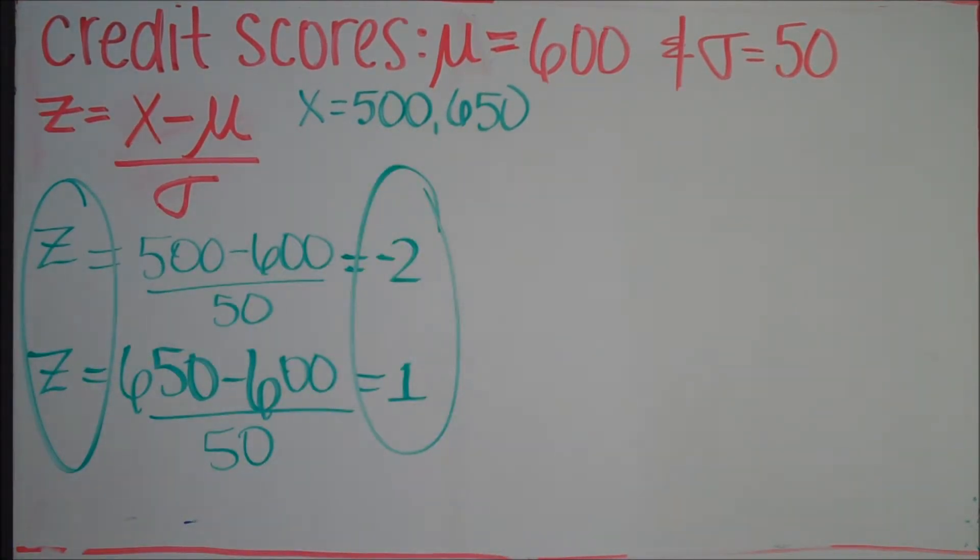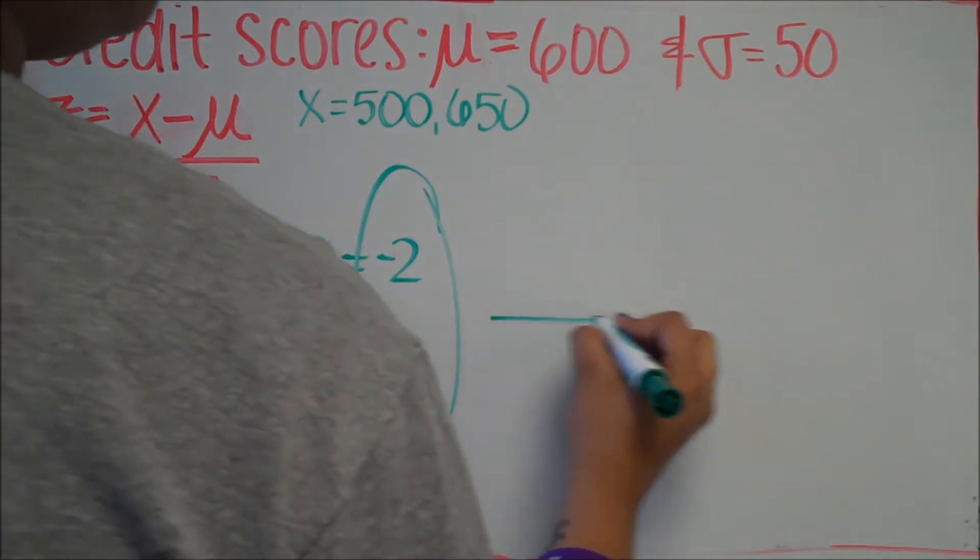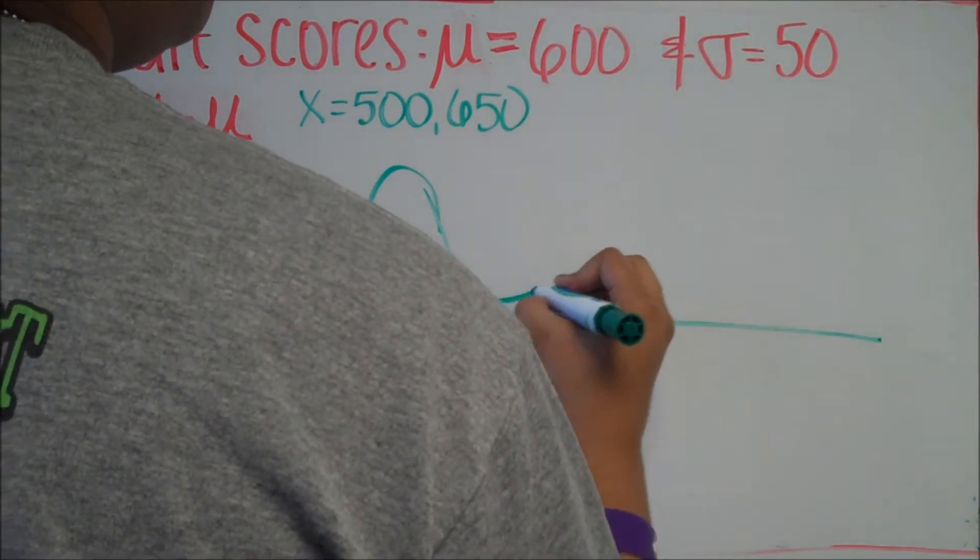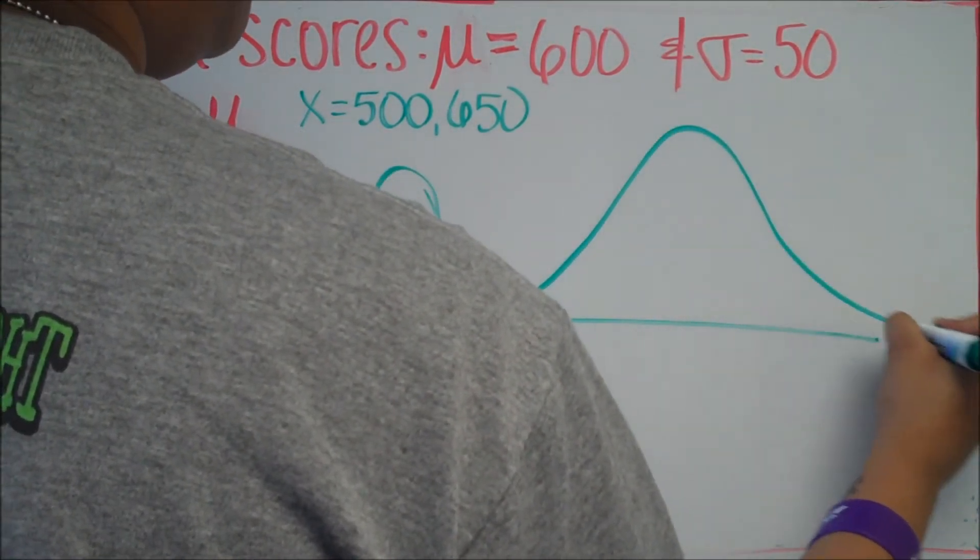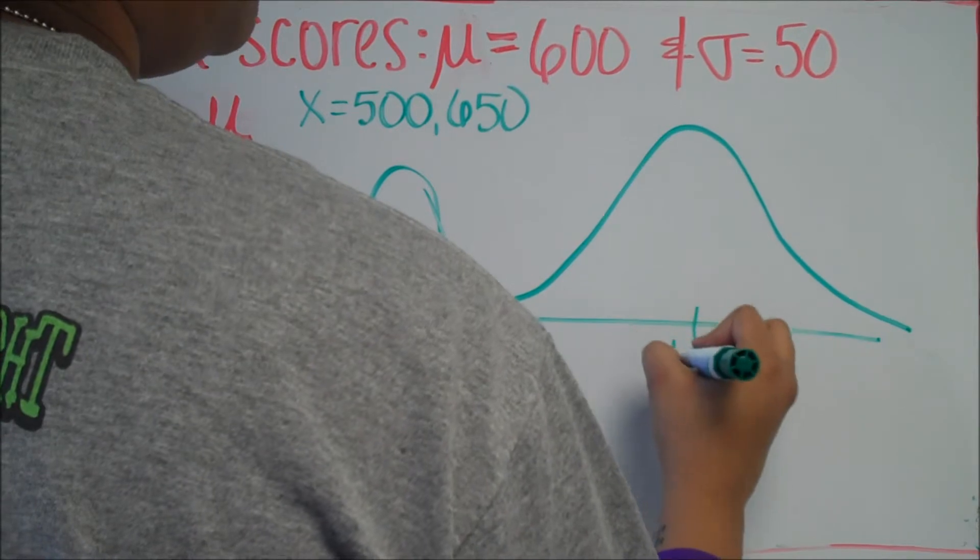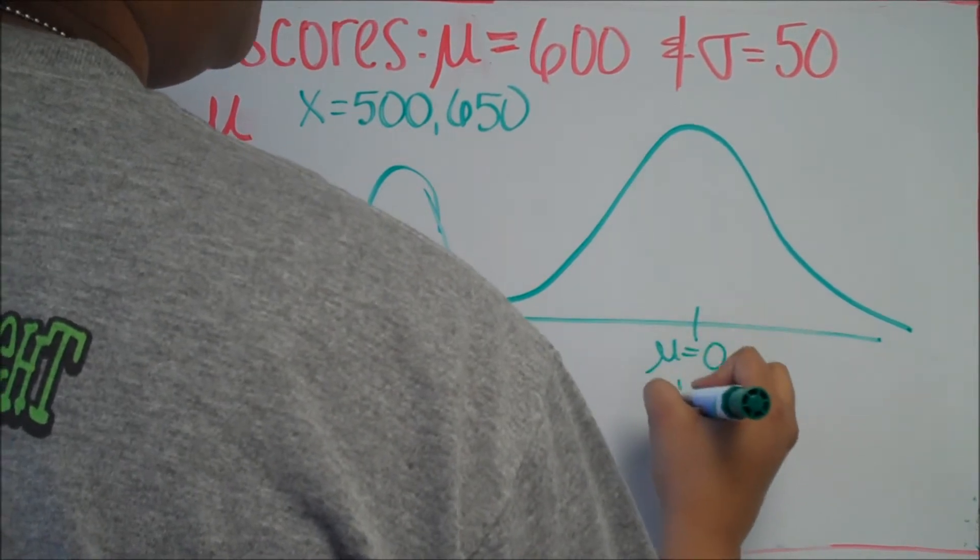Remember, when we're doing our z-scores, we want to graph them in the standard normal distribution, which means the mean is 0 and the standard deviation is 1. So we're going to graph that real quick. The mean is 0, the standard deviation is 1.